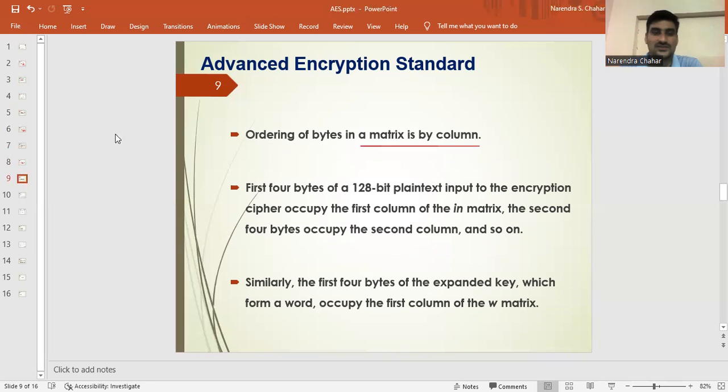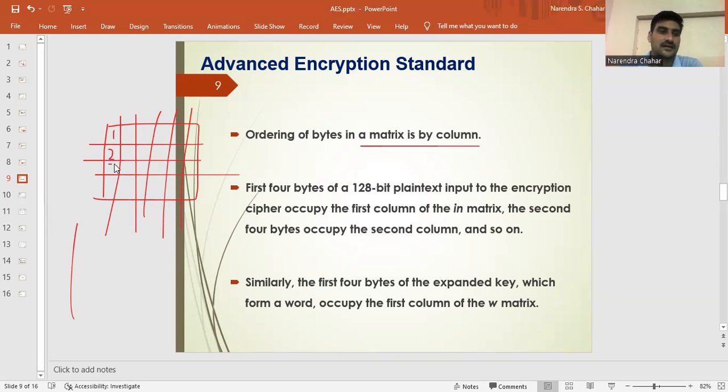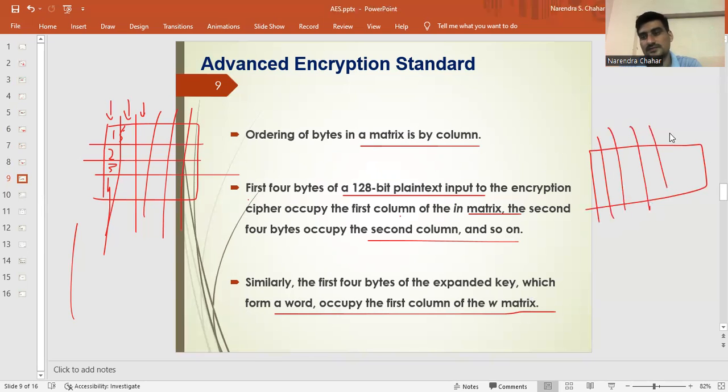We order bytes in a matrix by each column. Now we decide all the bytes will be ordered in the columns only. First 4 bytes of 128-bit plaintext input occupy the first column in the matrix. The second 4 bytes occupy the second column and so on. First 4 bytes here, second 4 bytes here, third 4 bytes here. Similarly, the first 4 bytes of expanded key occupy the first column of W matrix. 4 bytes are filled in this column, 4 bytes in this column, and so on.